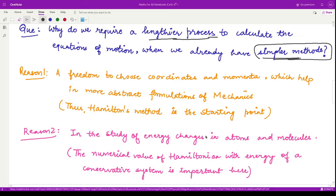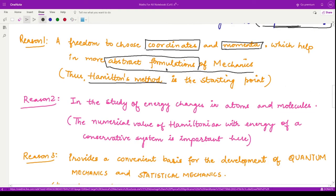The first reason is that Hamilton's method gives the starting point for many other formulations, the abstract formulations of mechanics. Here we have a freedom to choose whatever coordinates and the momenta that are required to completely describe the system. We can talk about abstract things which are not based just upon the displacements and the simple velocity. This approach based upon coordinates and momenta where we are keeping these two things on equal footing forms a base for other abstract formulations.